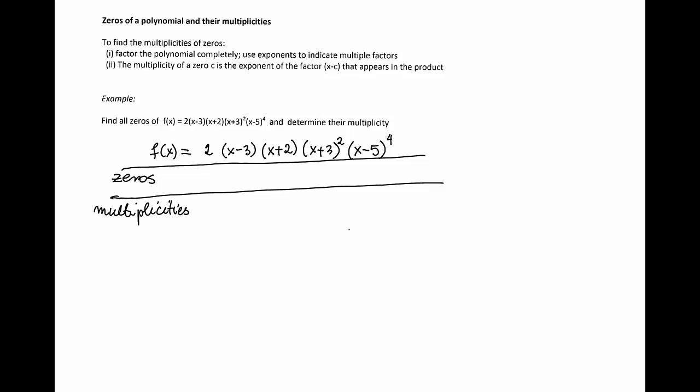So the first factor that will produce the zero is x minus 3. x minus 3 appears once, so the zero is 3 and the multiplicity is 1.